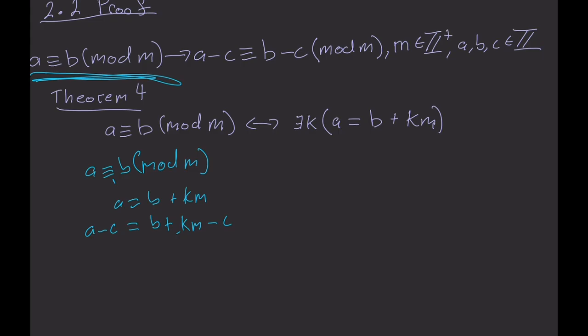And then, grouping the correct terms together with our associative and commutative laws, we end up with a minus c equals b minus c plus km.